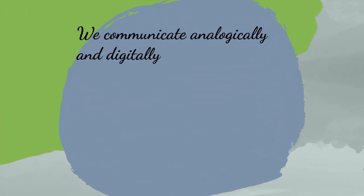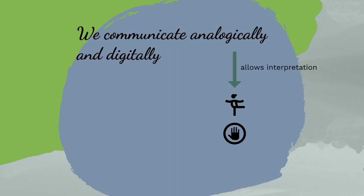Human beings communicate both analogically and digitally. Ideas can be described through analogies — any non-verbal means such as body language, gestures, signs, and tone of voice — which offer almost unlimited freedom of expression but also allow many possible interpretations. Ideas are also expressed through words, such as writing and speech. Digital and analog means of communication do not exist side by side; rather, they complement each other in every message.